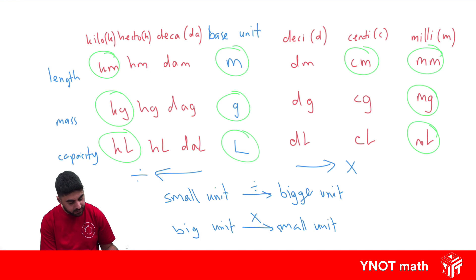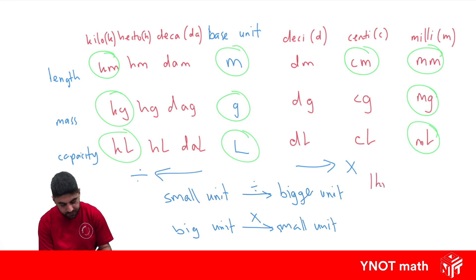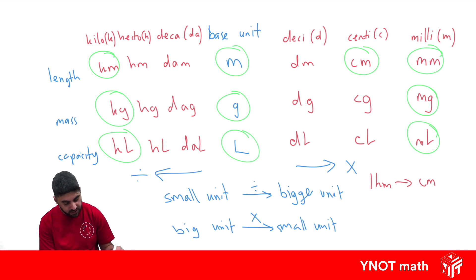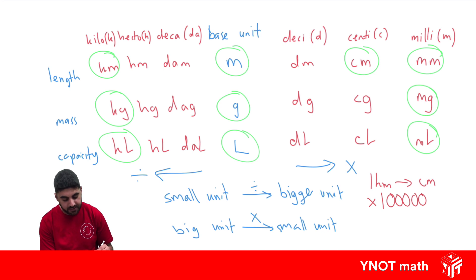Let's look at a couple of examples. How would you change one kilometre into centimetres? Here I'm going from a big unit to a small unit, which means I need to multiply. How many jumps is this? One, two, three, four, five — five jumps, so I need to multiply by a one with five zeros. I'm going to multiply by 100,000. So one kilometre is 100,000 centimetres.